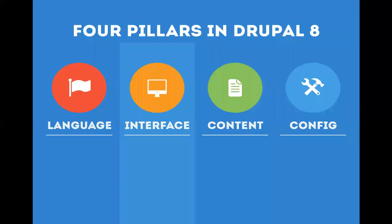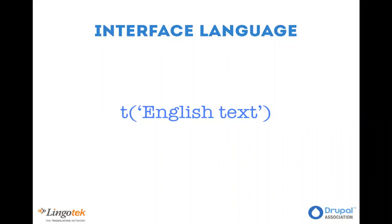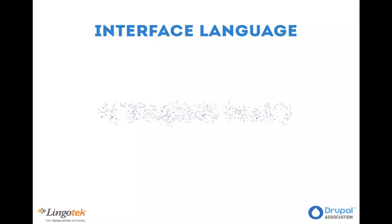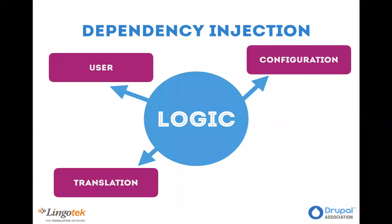Now that we can create, load, and perform operations on languages, and know the negotiated language for the current page, we may need to translate strings for our user interface. If you're familiar with Drupal 7, we have the t() function that we can pass a string and it gets translated to the negotiated language. In Drupal 8 we have the same, but we actually should avoid calling the global t() function in most cases. Internally there are a lot of differences we'll see shortly.